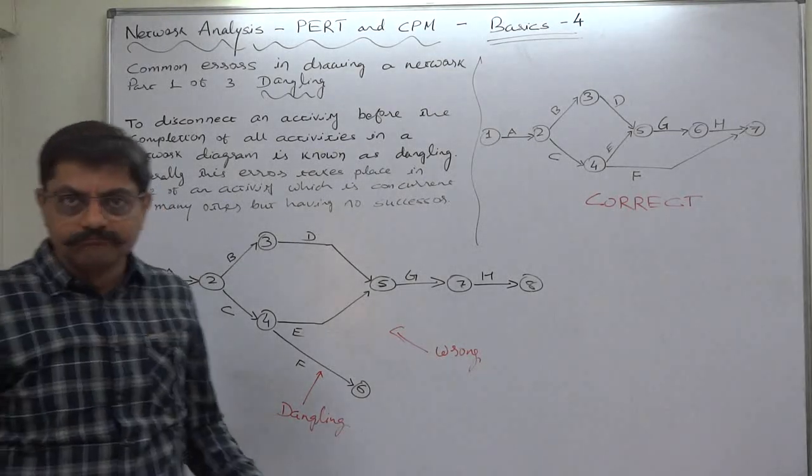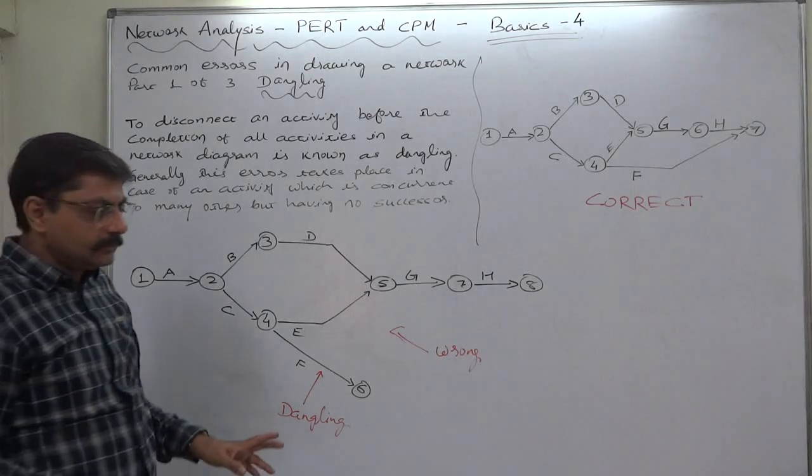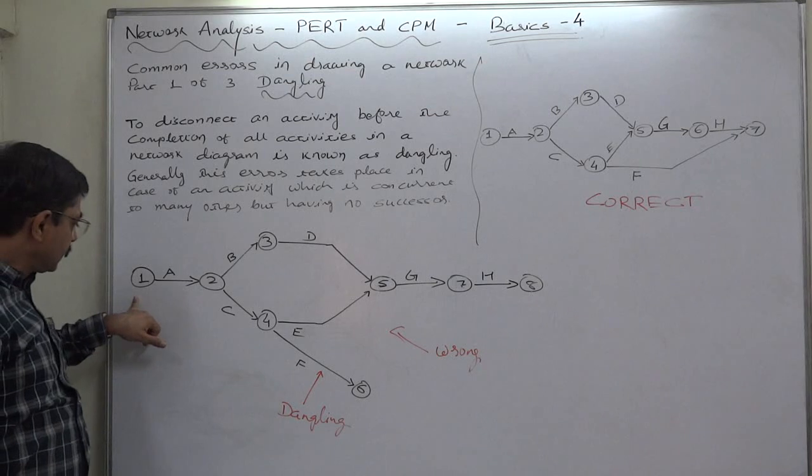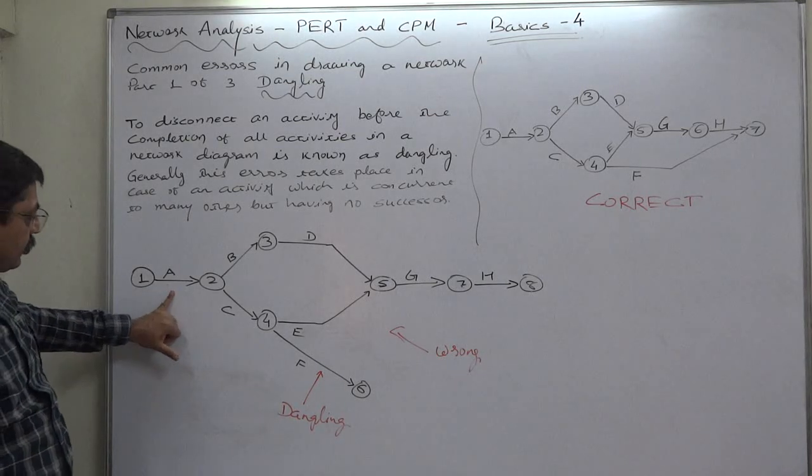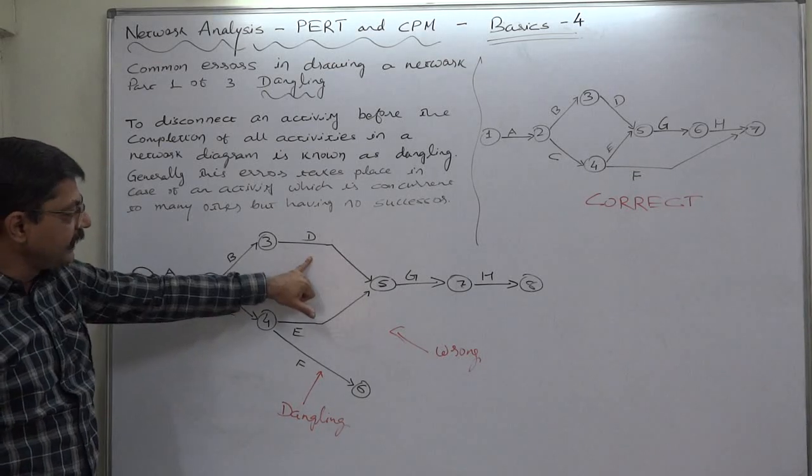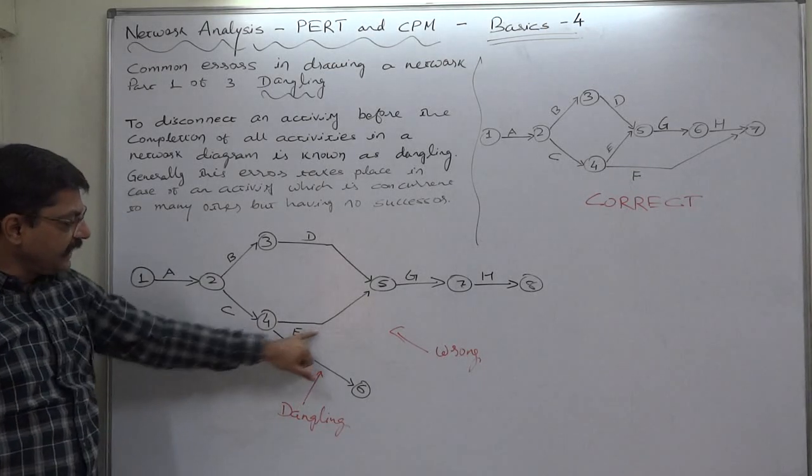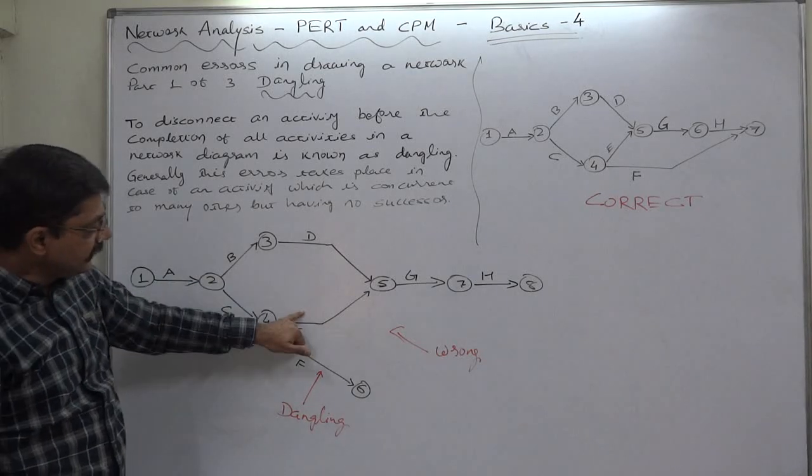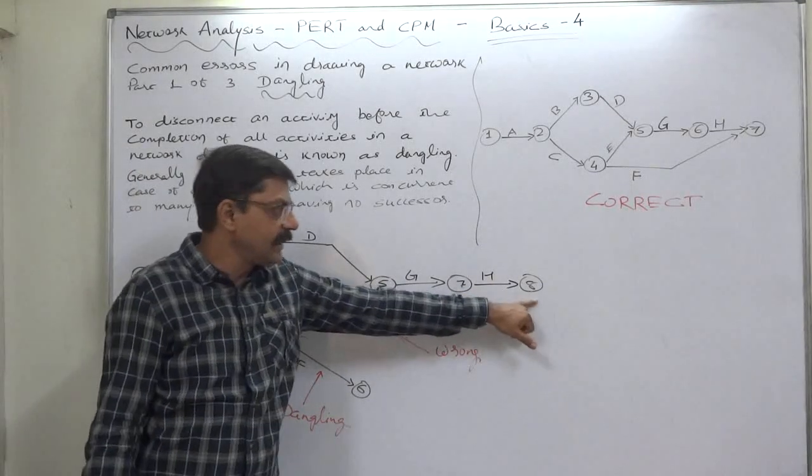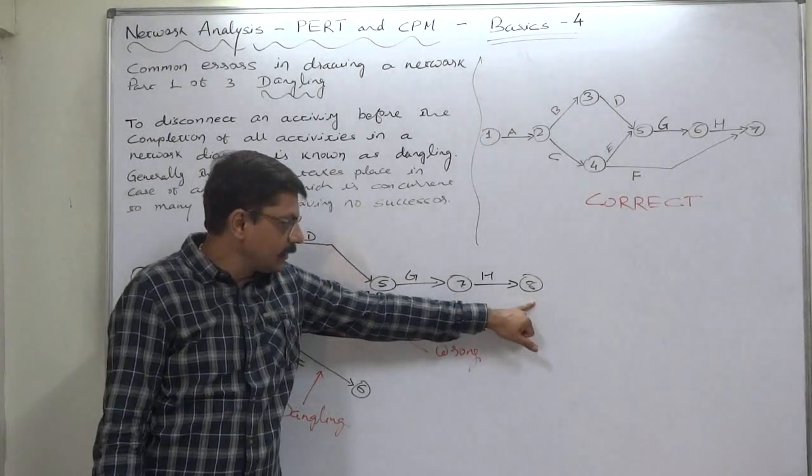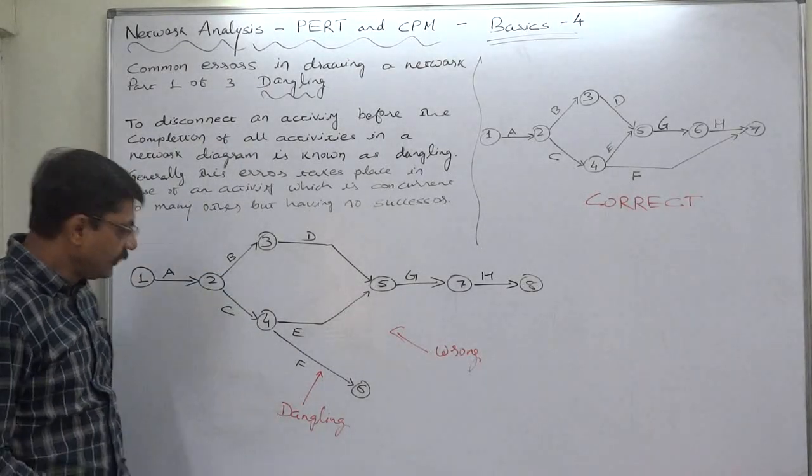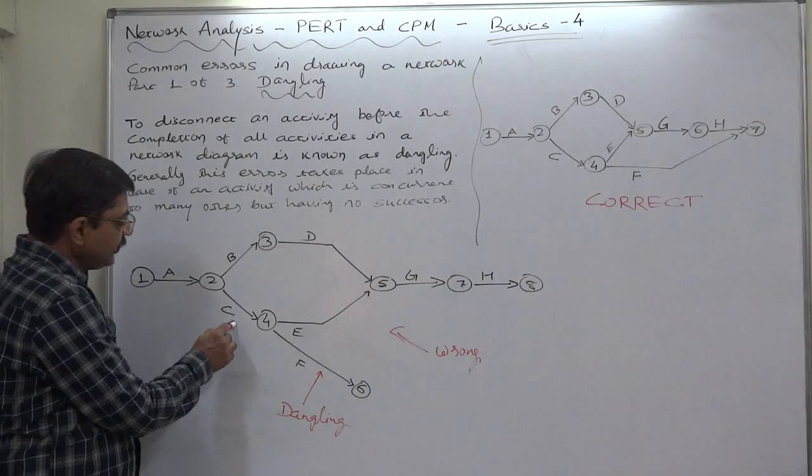See this diagram. At the start event, activity A is the predecessor of B as well as C. B is predecessor of D. C is predecessor of E and F. D and E are common predecessors of G. G is predecessor of H, and at event number 8, the project ends. Now, the interesting part is this: C is...